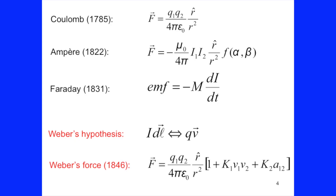At his time, Weber knew the laws of Coulomb — which is analogous to Newton's law of gravitation — the force of Ampere between current elements (not the circuital law), which also falls as one over r squared but depends on the angle between the elements and the straight line connecting them. And he knew Faraday's law of induction: that if you change the current in the primary circuit, you induce a current in the secondary circuit.